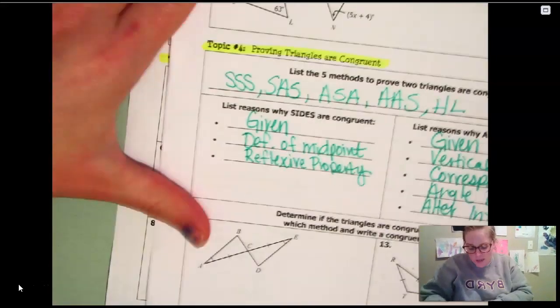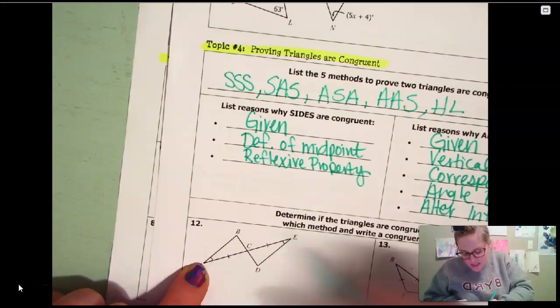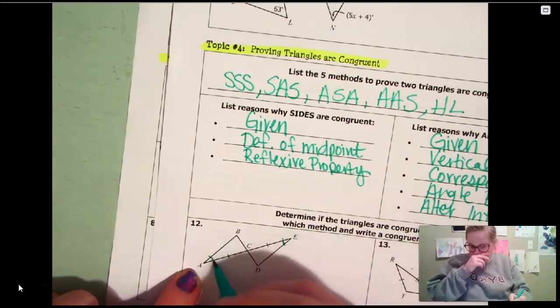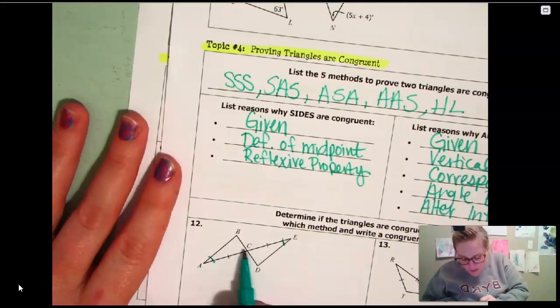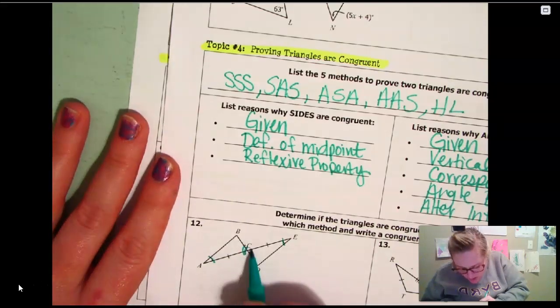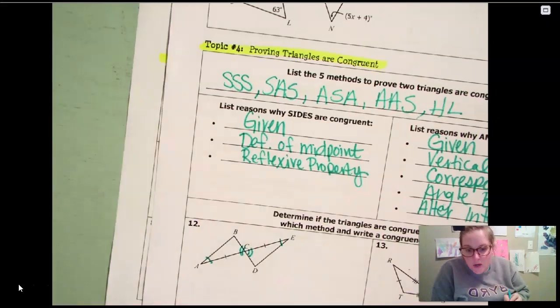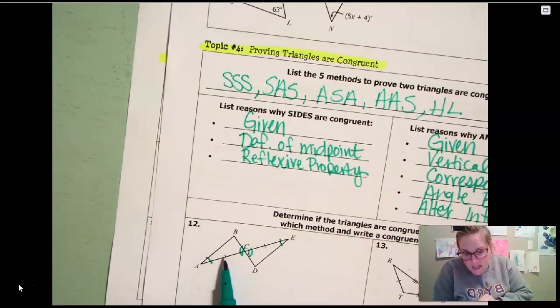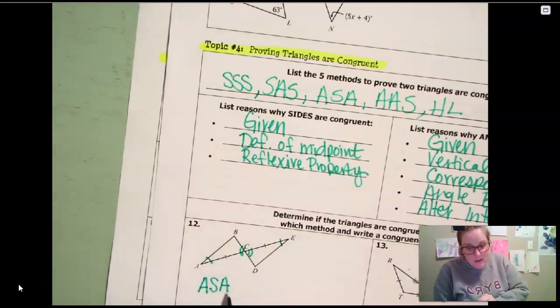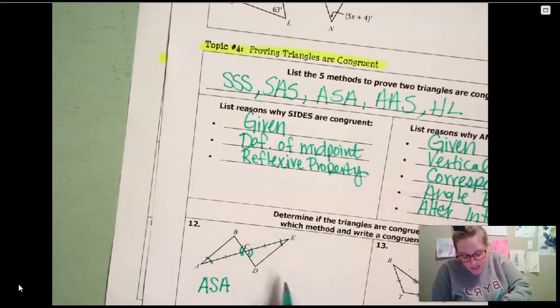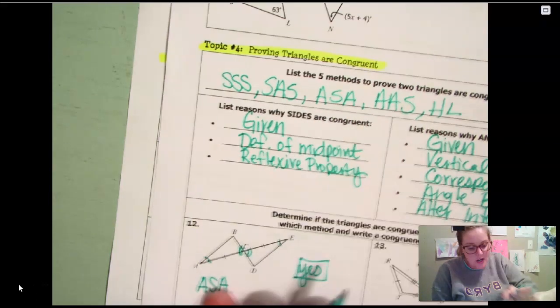So like if you look at this first one, they tell you that these out angles are going to be congruent. So you know that. But you also know these are vertical angles, so you know that those angles are going to be congruent. So we have an angle, the included side, and an angle. Angle, included side, angle. Is that one of our five reasons? It sure is. So are these congruent? Yes. And so that is your answer.